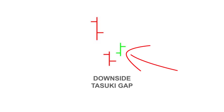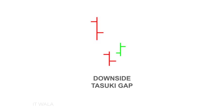Then, the third candle should be bullish, and the close of this third candle should be within the gap of the first two candles. So in short, this third candle is unable to close the gap created by the earlier two candles. This pattern is called the Downside Tasuki Gap Pattern, and it is said to have confirmed a bearish market trend — meaning the market shall continue to see an ongoing downward movement after this pattern is formed.